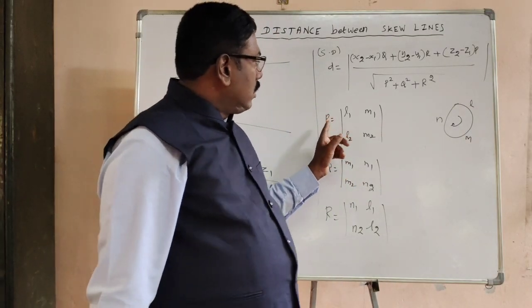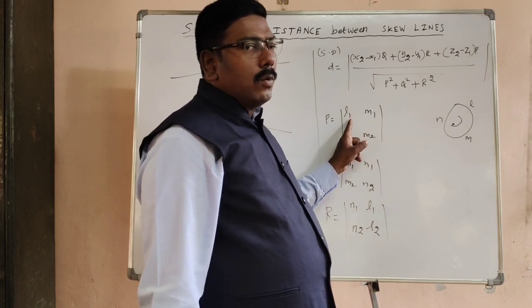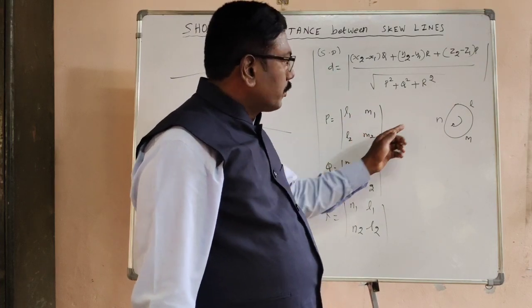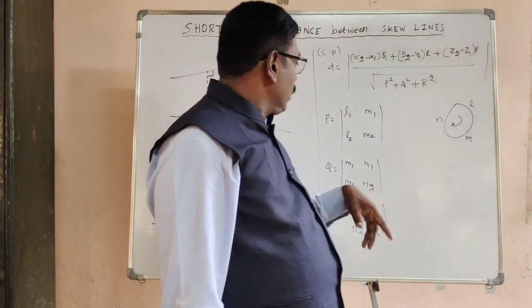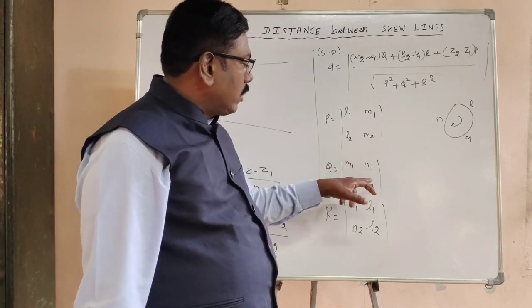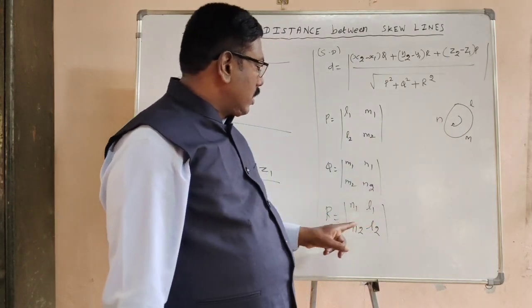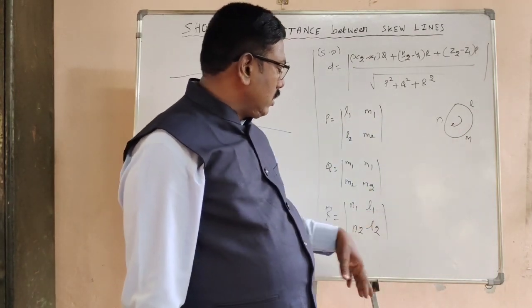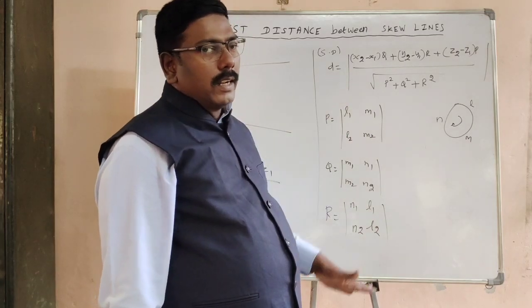Now let me explain what is P. P equals determinant value of L1, M1, L2, M2. Remember the cyclic order. And Q equals M1, N1, M2, N2. And R equals N1, L1, N2, L2. These determinant values. This is the shortcut formula to find the shortest distance between two skew lines.